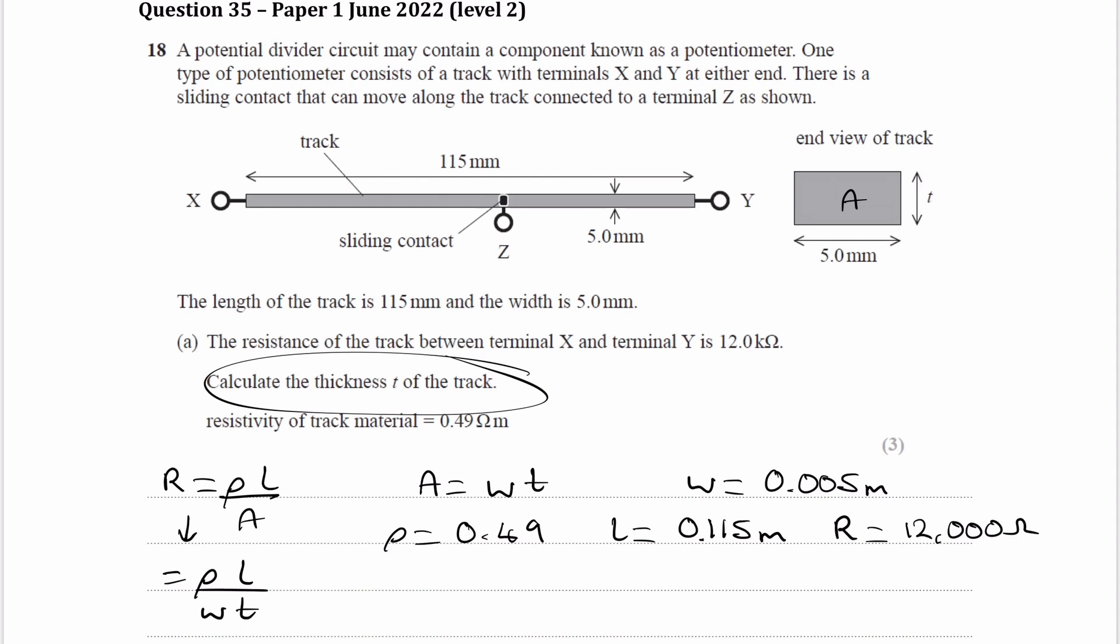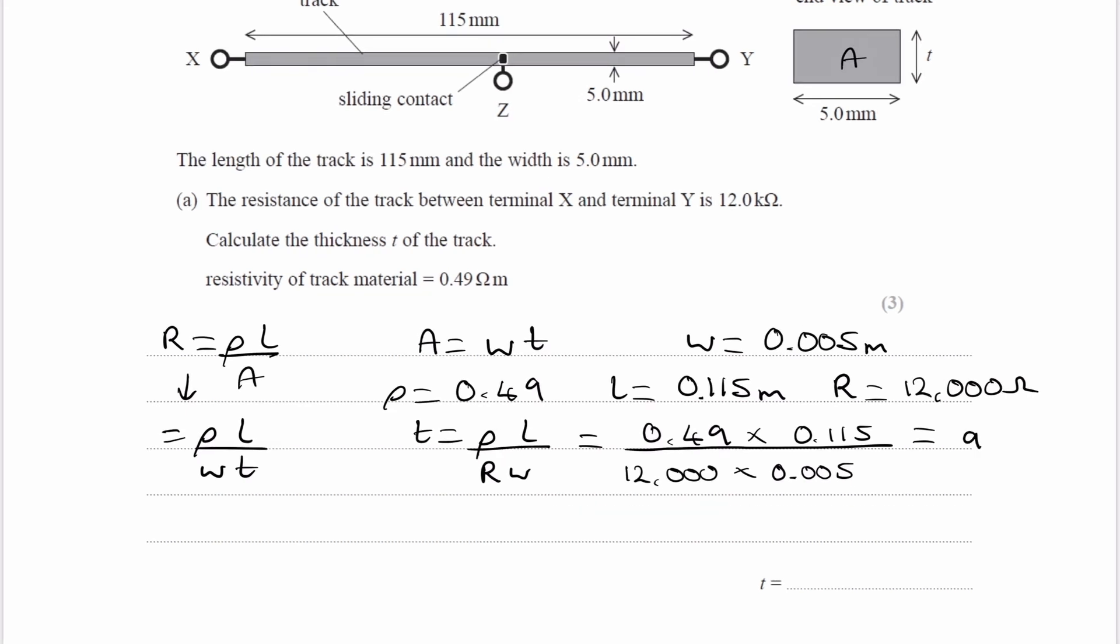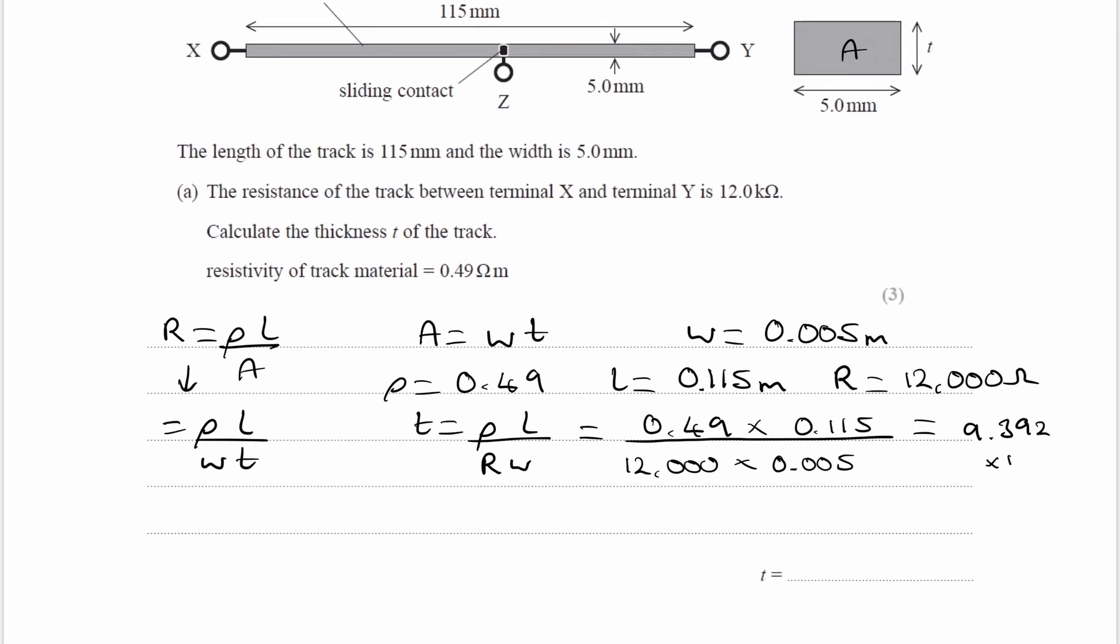We're trying to get thickness, so we can rearrange this equation for thickness. It's then equal to resistivity times length over resistance times width. Then we can put everything in: 0.49 times the length, divided by the resistance, multiplied by the width. We type that in and we end up with 9.392 times 10 to the minus 4.